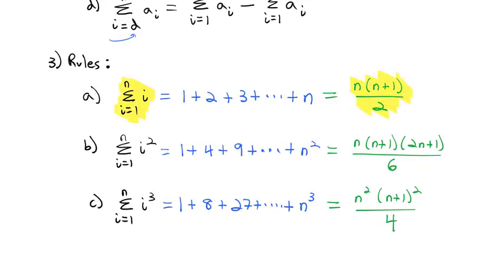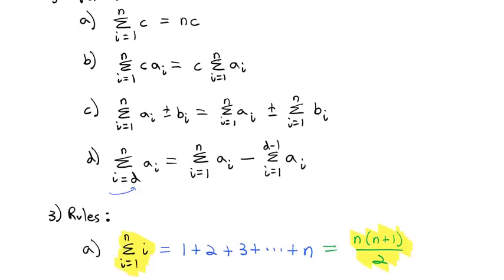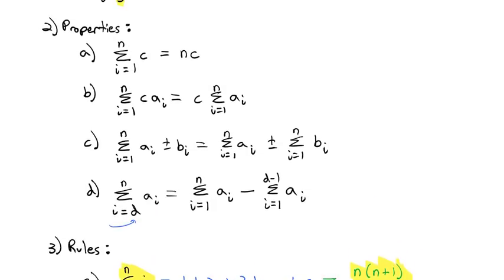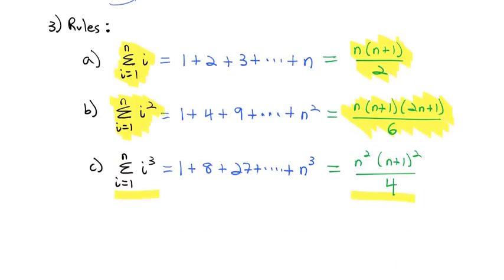To summarize the formulas: the sum of i equals n(n+1)/2; the sum of i² equals n(n+1)(2n+1)/6. You won't be required to memorize the i³ formula. But the formulas for i and i² you should definitely know, along with how to use them with the four properties — those first two properties especially are what make everything come together.